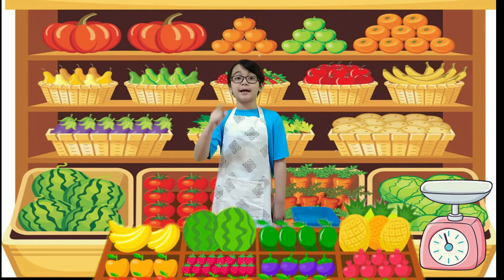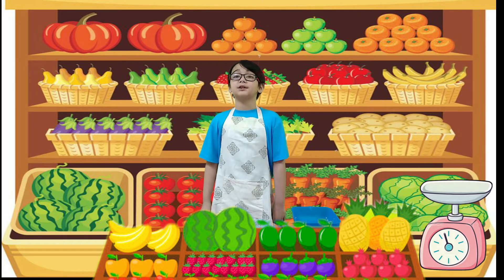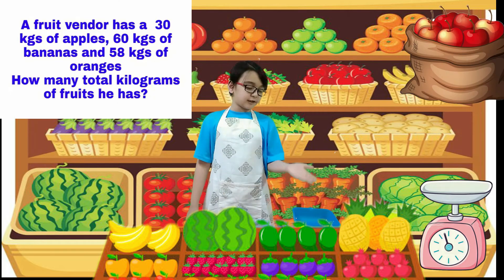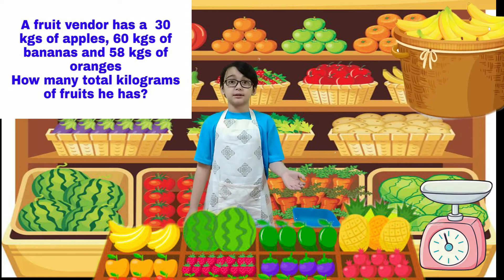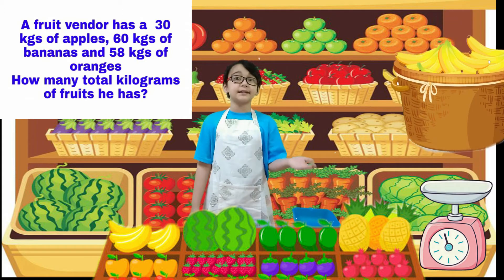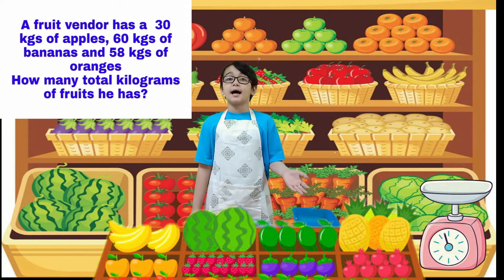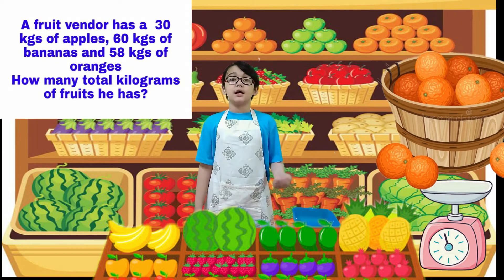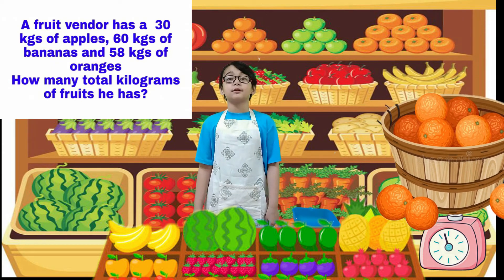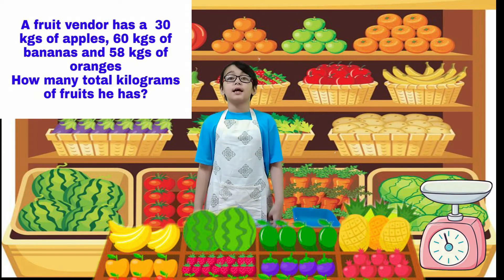In measuring mass, we measure heavy objects in kilograms. I have 30 kilograms of apples, 60 kilograms of bananas, and 58 kilograms of oranges. How many total kilos of fruits do I have?